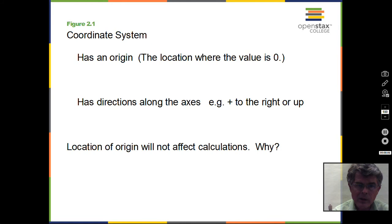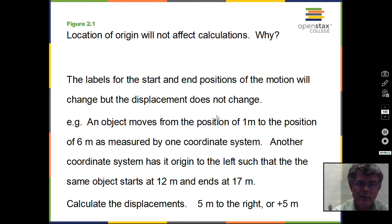So as an example of this, suppose we look at the labels for start and end positions of one motion measured in two coordinate systems. We'll use two coordinate systems, and what we're going to find is that the labels of starting and ending will change, but the displacement will not change. Let's see how that happens. So an object moves from the position of 1 meter to the position of 6 meters in some coordinate system. Alongside, we have another coordinate system, but its origin is to the left. So for this first coordinate system, when the object is at 1 meter, the label on the second coordinate system is 12 meters. And at the endpoint, 6 meters is the label in the first coordinate system, 17 meters is the label in the second coordinate system.